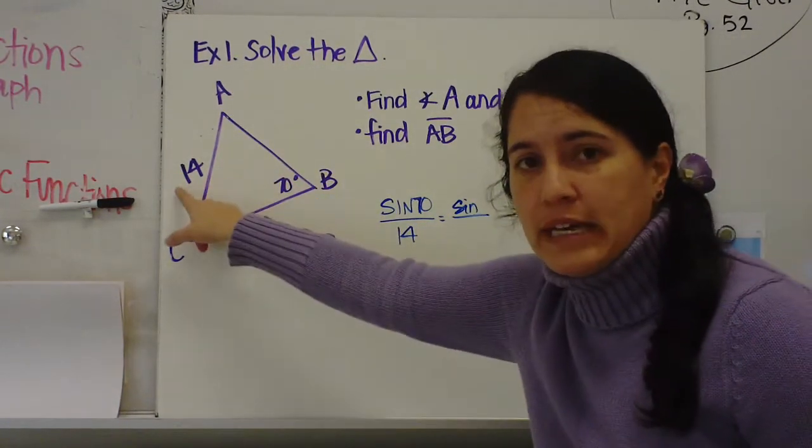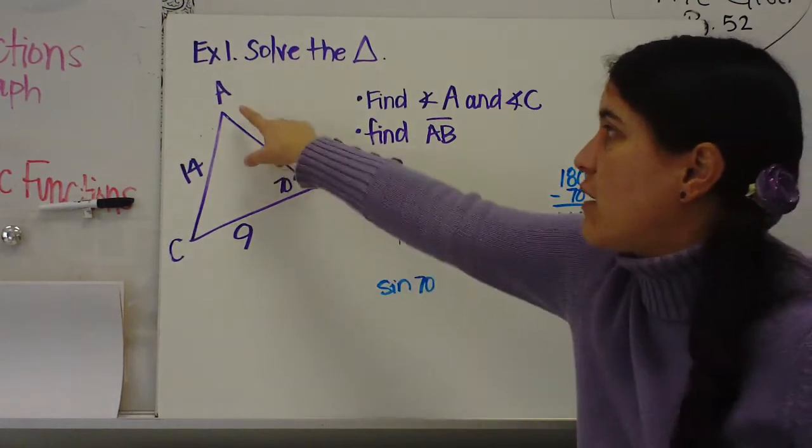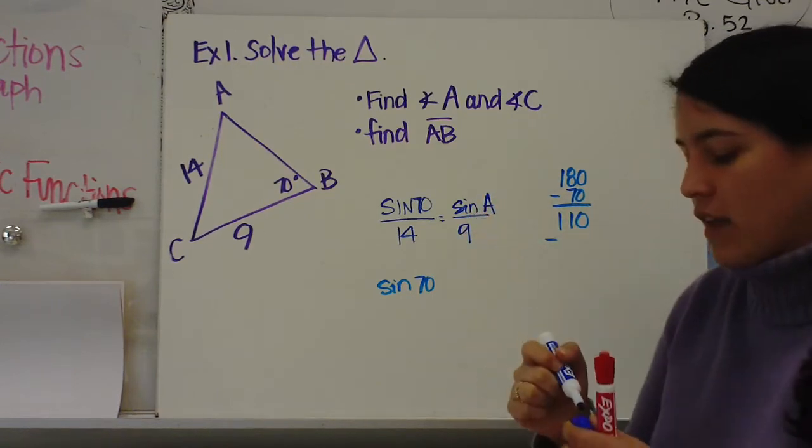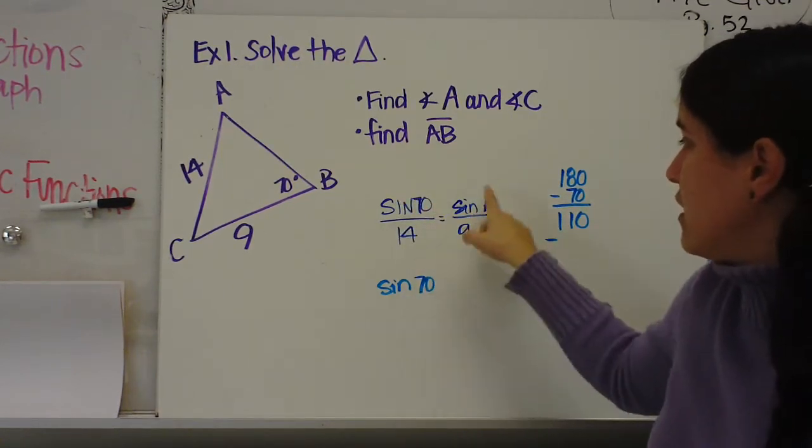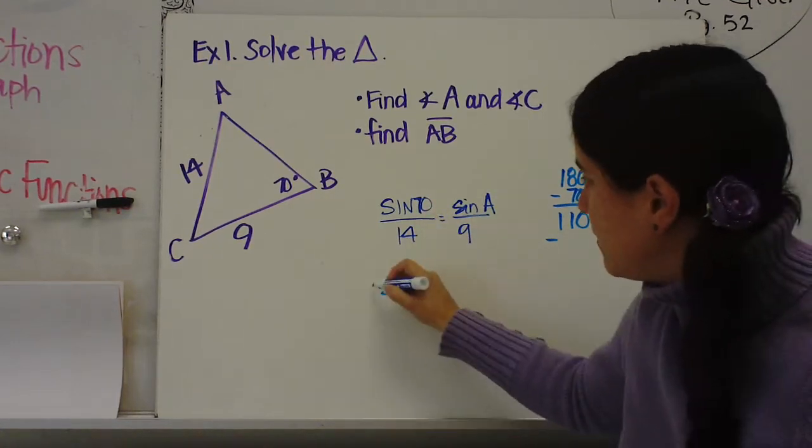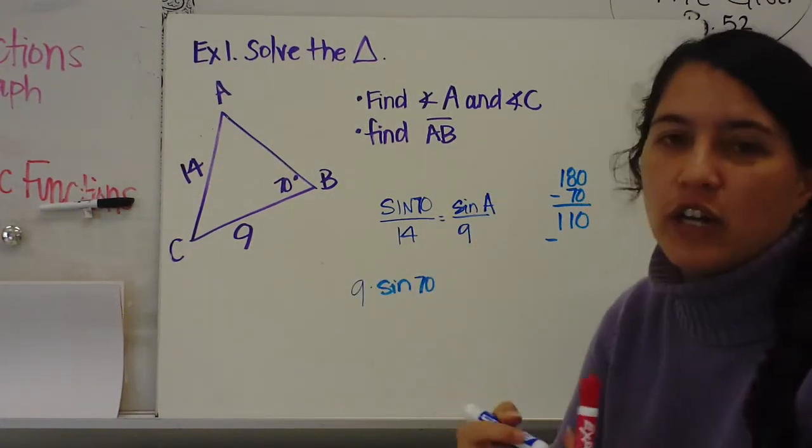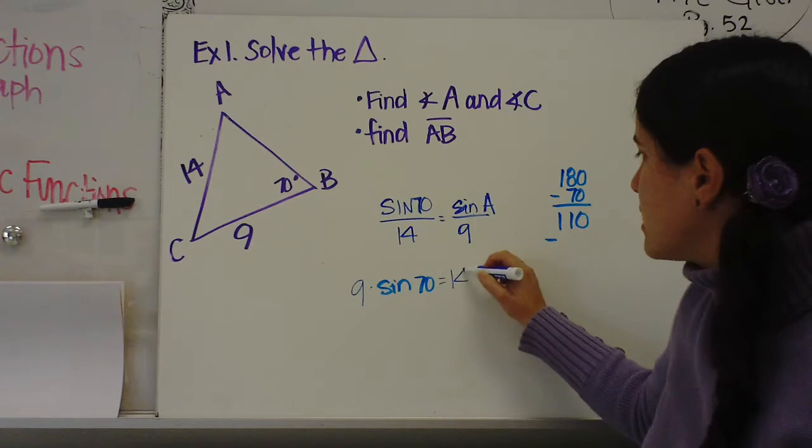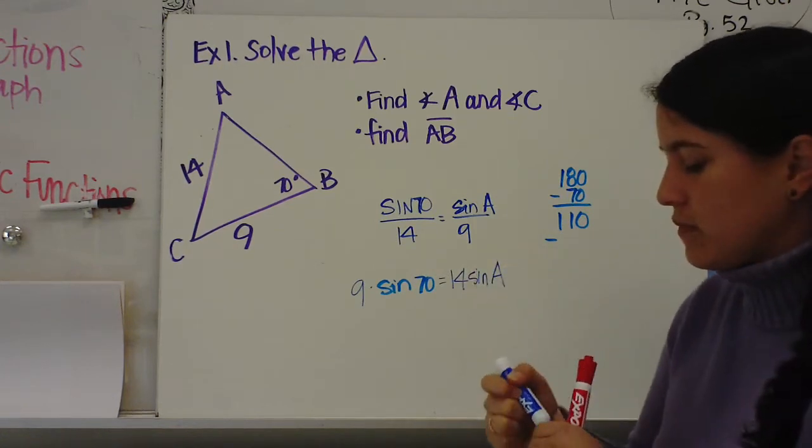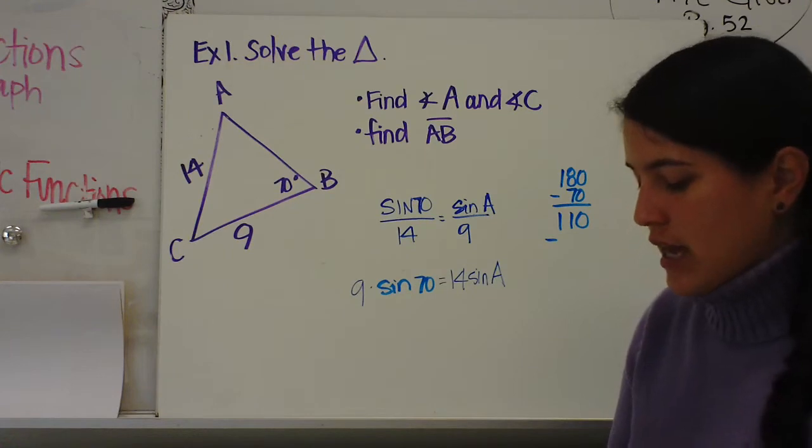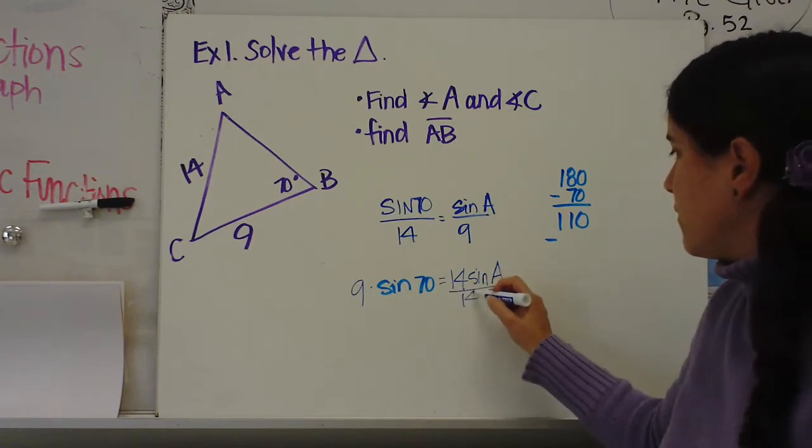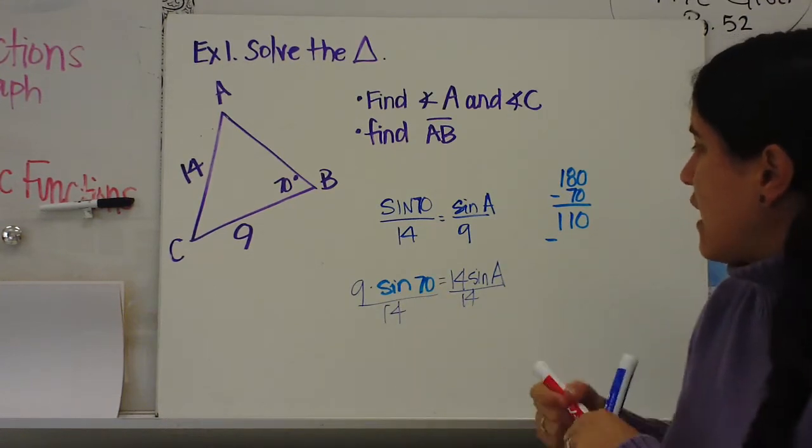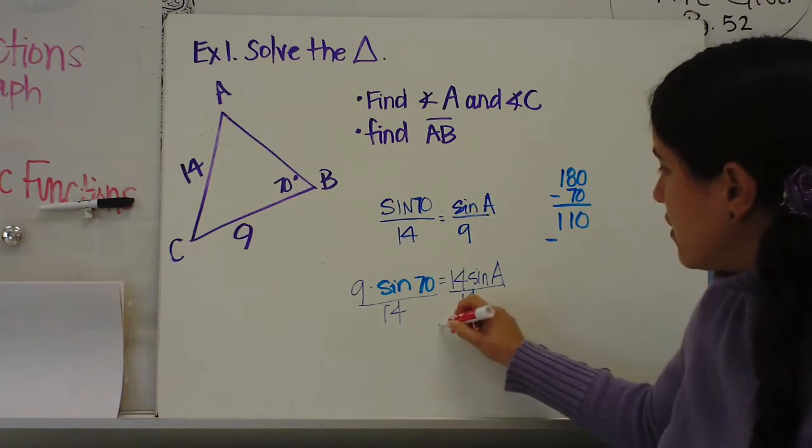Because I have 9, then I want to use sine of A over 9. Then you can cross multiply. So I get sine of 70 times 9. We usually put it in front of the sine. So 9 times sine of 70 equals 14 times sine of A. You're going to divide both sides by 14. Then we have sine of A equals that.